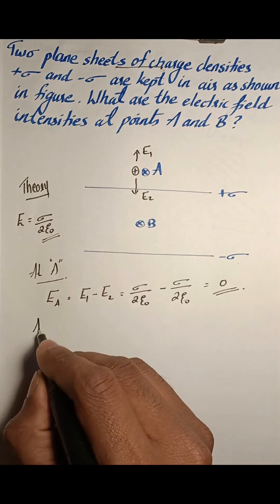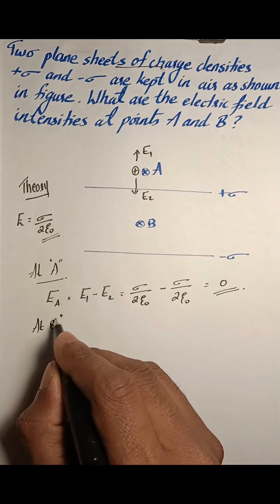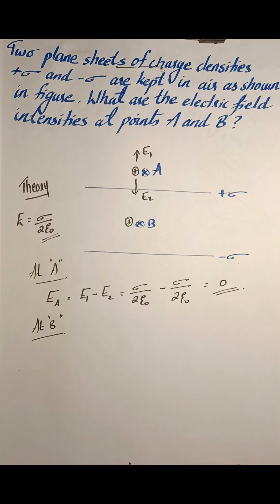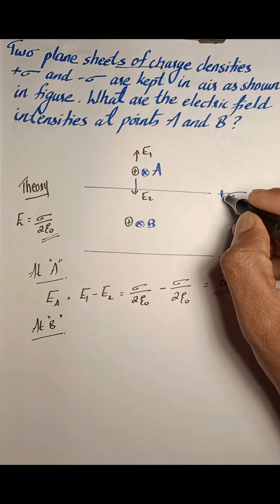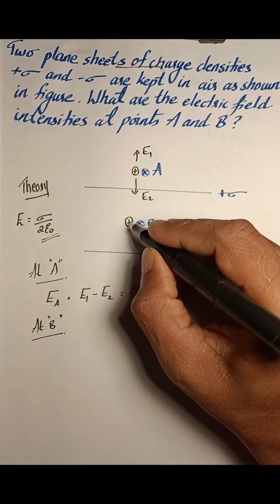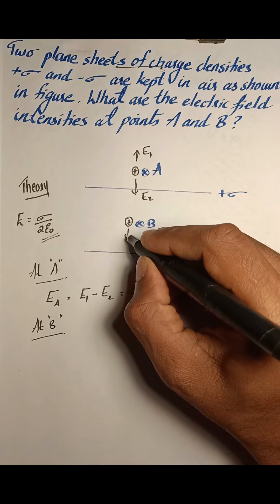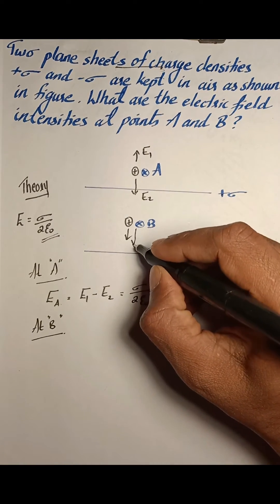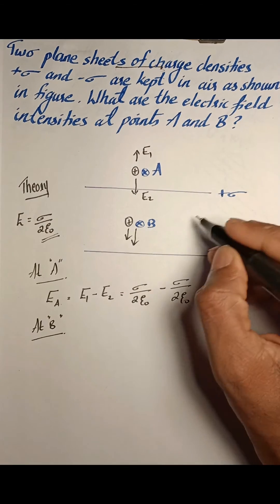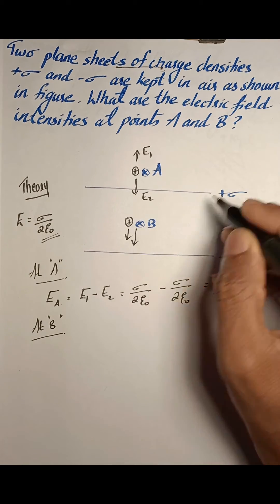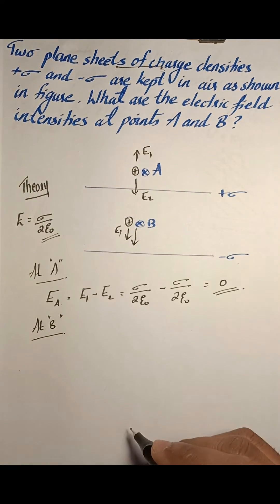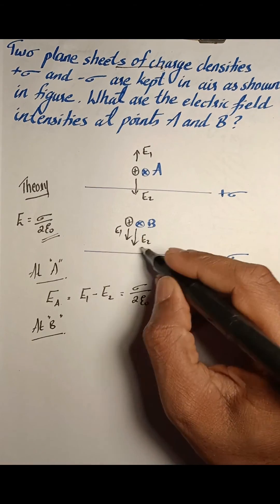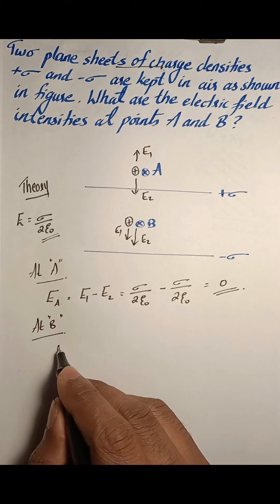Now we will find the net electric field at B. Again, let us assume a positive charge is placed at B. The positively charged sheet will repel this positive charge in one direction. Similarly, the negatively charged sheet will attract this positive charge in the same direction. Both the electric field due to the positive sheet and the electric field due to the negative sheet are in the same direction, so we add these two vector quantities.